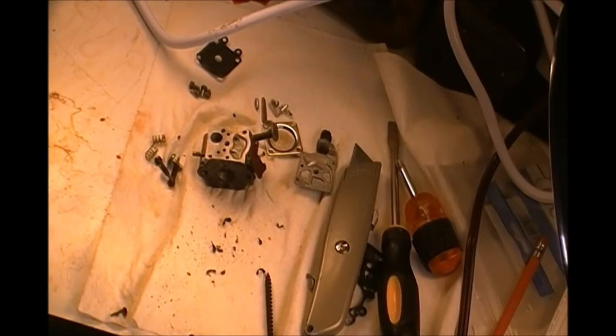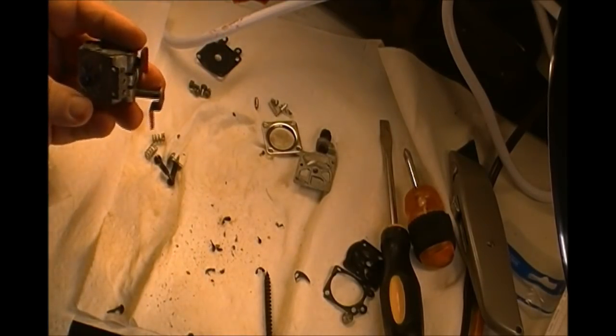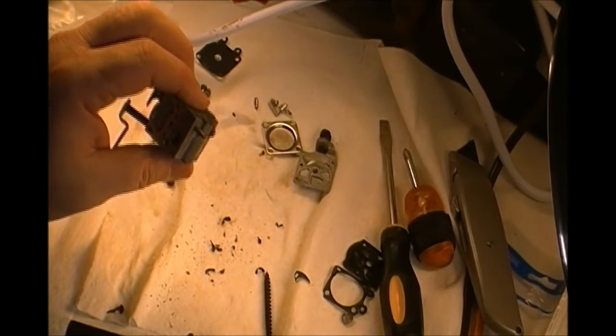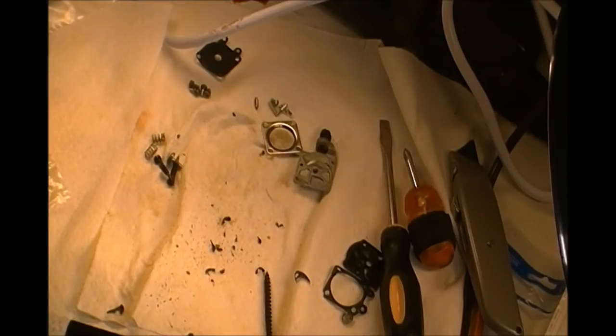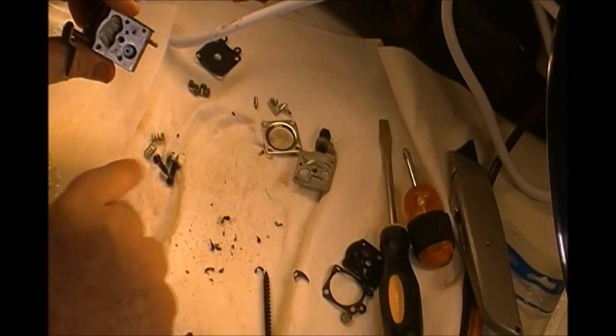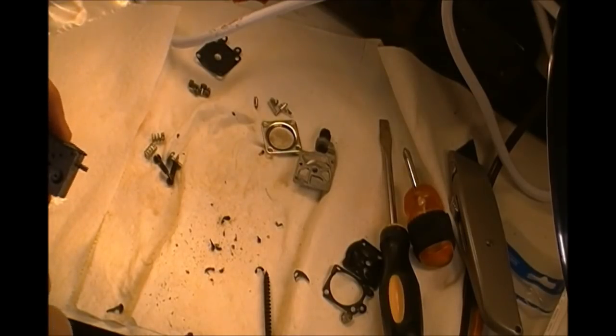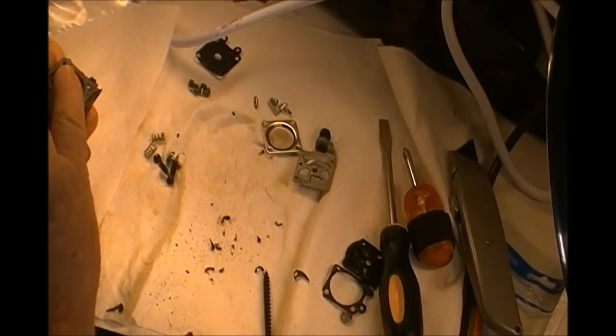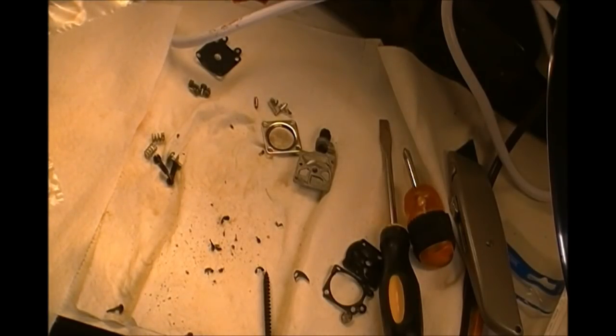Well alrighty then, let's see if we can put this thing back together. One real important thing about this is where the needle goes in there - you want to make darn sure you can see through that. You see on this side is where that little screen goes in. You want to make sure that you can see light through it, because the fuel flows through the screen and then the needle valve allows it to flow on the carburetor. So I want to make sure all this is nice and clean. I ran it through the machine another couple of times.